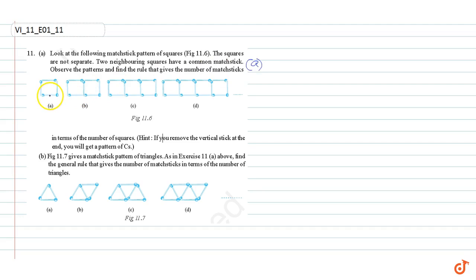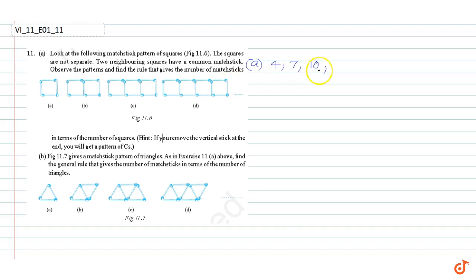We can see that the first matchstick pattern has 4 matchsticks, the second matchstick pattern has 7 matchsticks, the third matchstick pattern has 10 matchsticks, and the fourth matchstick pattern has 13 matchsticks, and so on.